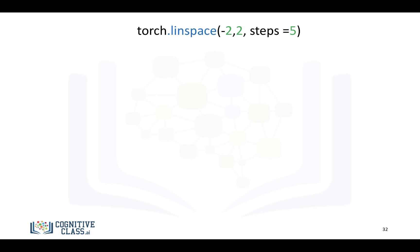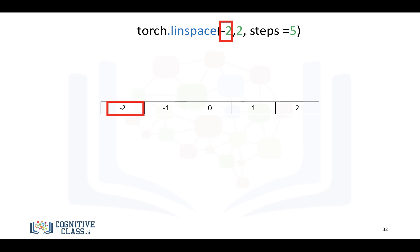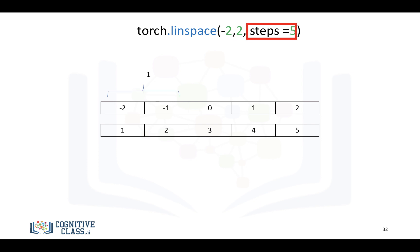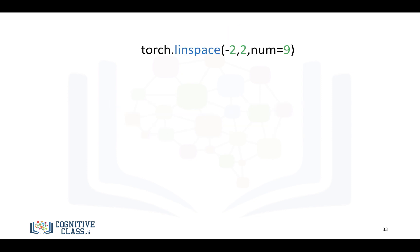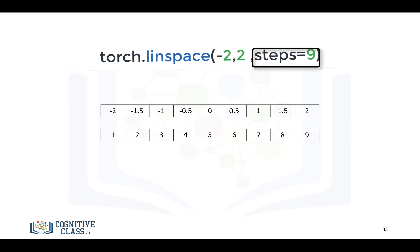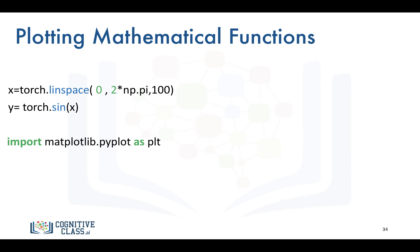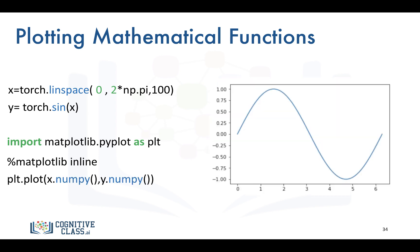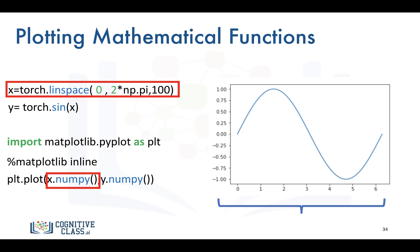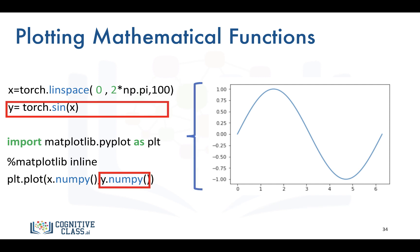Another useful function is linspace, which creates a sequence of numbers starting from a given start value and ending at a given end value with a specified number of samples. For example, from negative 2 to 2 with 5 samples gives an increment of 1; with 9 samples the increment becomes 0.5. Just like NumPy, we can plot mathematical functions: we use linspace, apply the sine function to every element, and then use matplotlib. We cast the tensors to NumPy arrays using .numpy() for plotting.